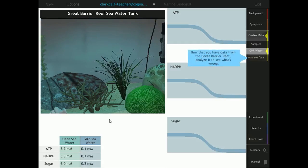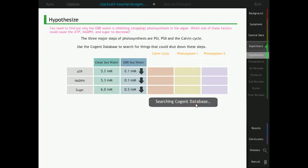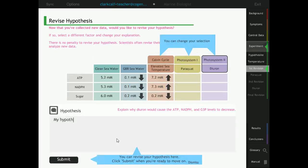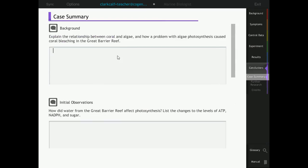Students then hypothesize which of three possible issues is responsible for the bleaching. Next, they test their hypothesis by treating the coral. Students are able to revise their hypothesis if they do not select the correct treatment.